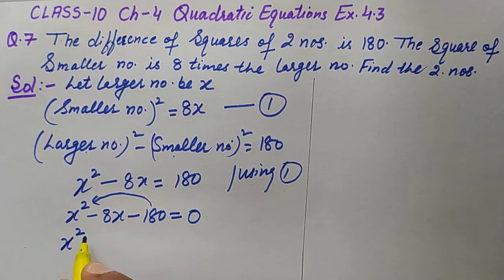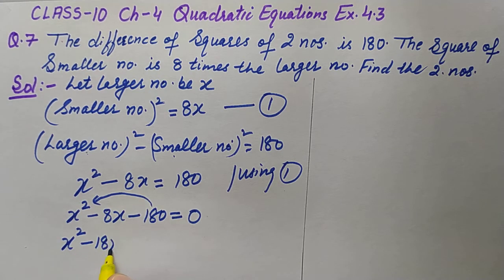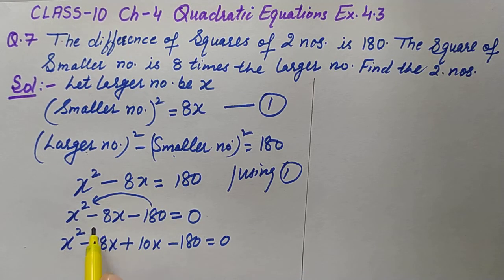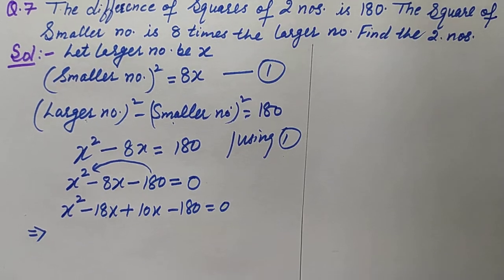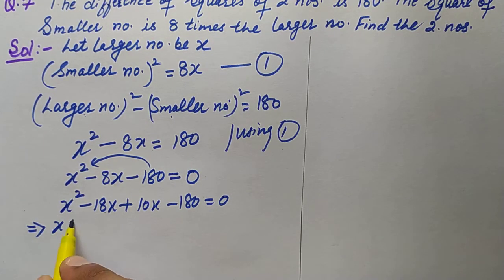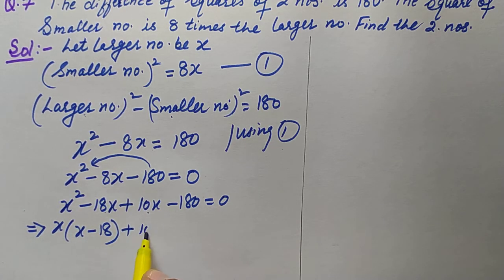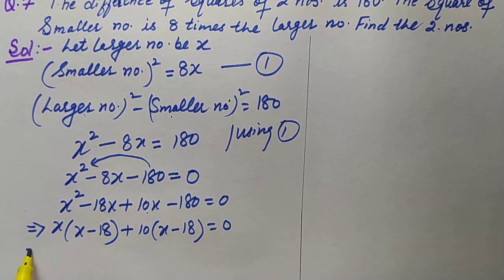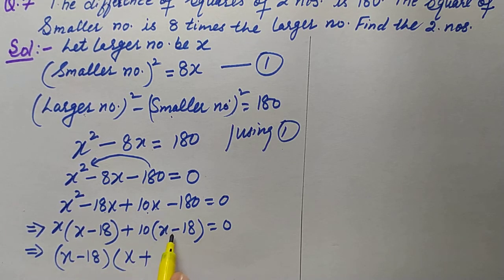The factors are minus 18x and plus 10x. Their sum is minus 8x and their product is minus 180x squared. So we rewrite as x squared minus 18x plus 10x minus 180 equals zero. Taking x common from the first two terms gives x(x minus 18), and 10 common from the last two gives 10(x minus 18).